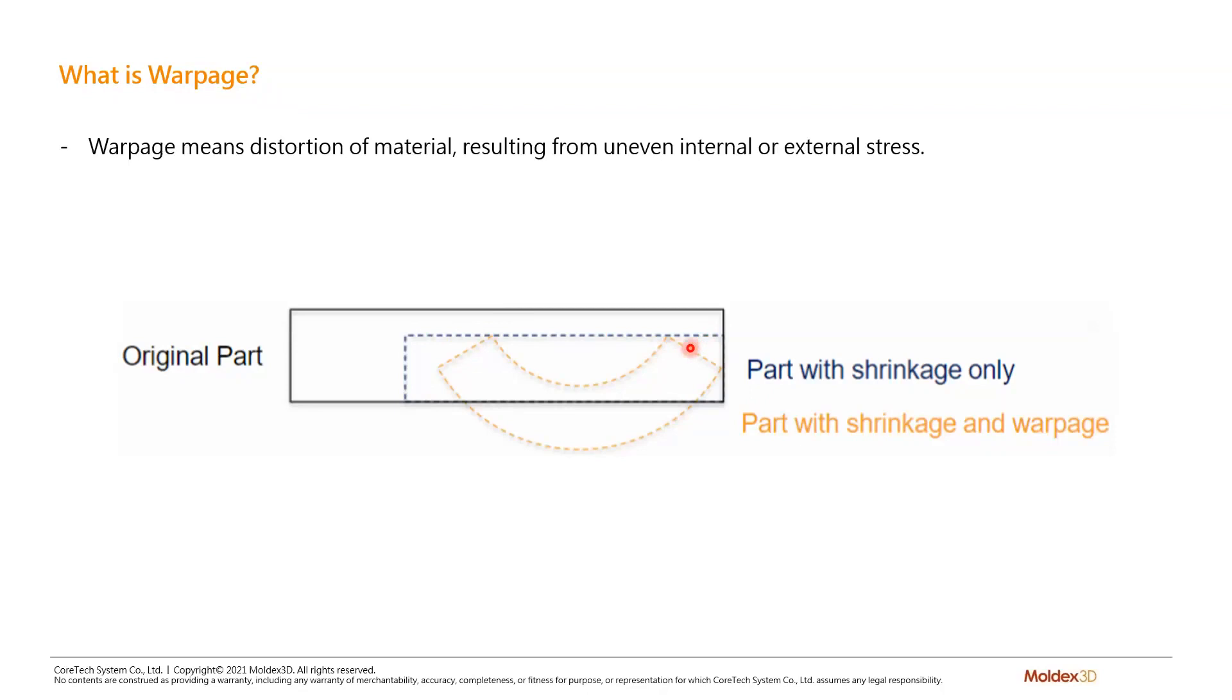However, since plastic is a poor heat conductor, all injection molding parts have non-uniform shrinkage, so-called warpage. By understanding the cause of warpage, it helps us prevent and predict severe warpage.